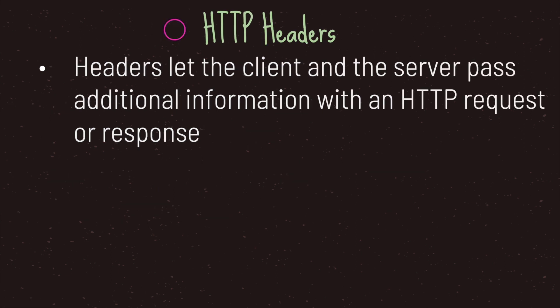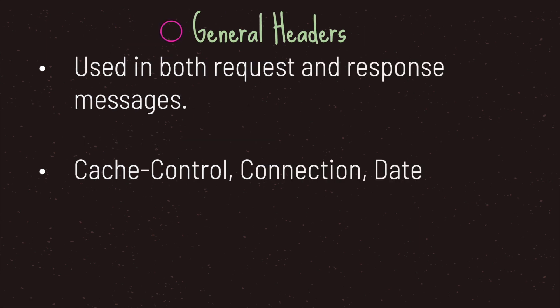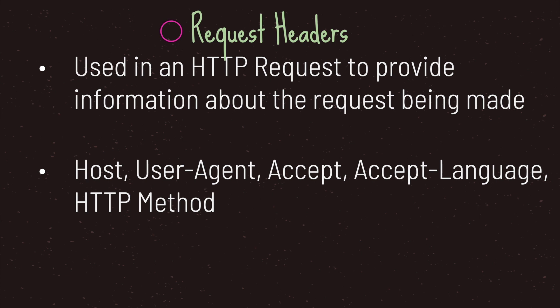The next thing you should understand are HTTP headers. Headers let the client and the server pass additional information with an HTTP request or response. HTTP headers are a more advanced topic, but let's go through them briefly. Headers can be categorized into four different types: general headers, request headers, response headers, and entity headers. General headers are used in both request and response messages and can include cache control, connection, and date information. Request headers are used to provide information about the request being made — for example, host and user agent data, which is your browser and the computer you are using, such as Firefox and Macintosh. This is useful to the server to know what kind of information it needs to provide back to you.